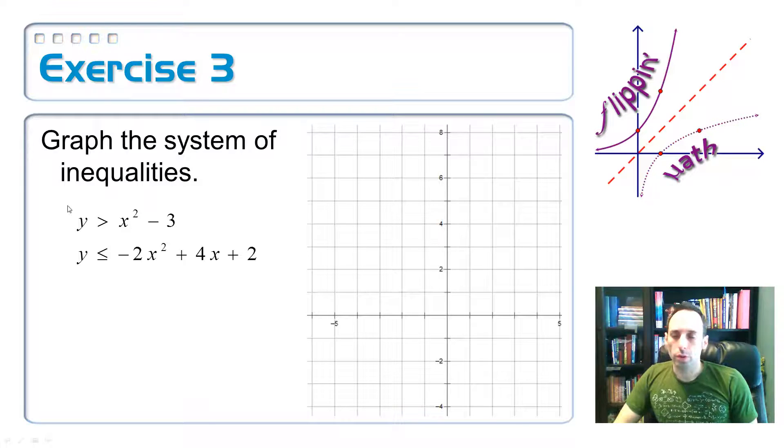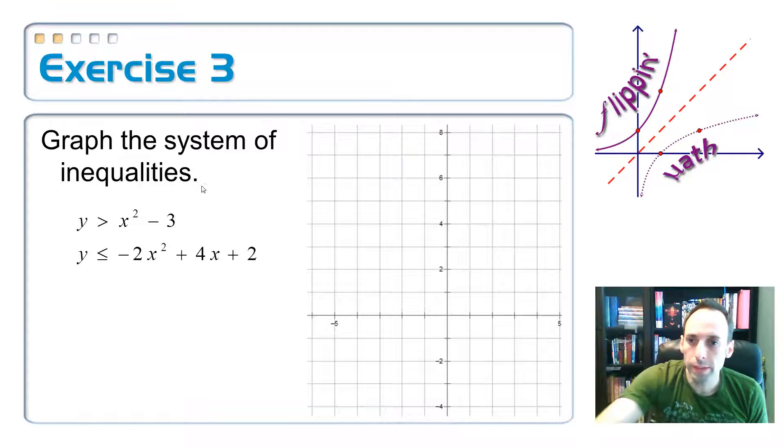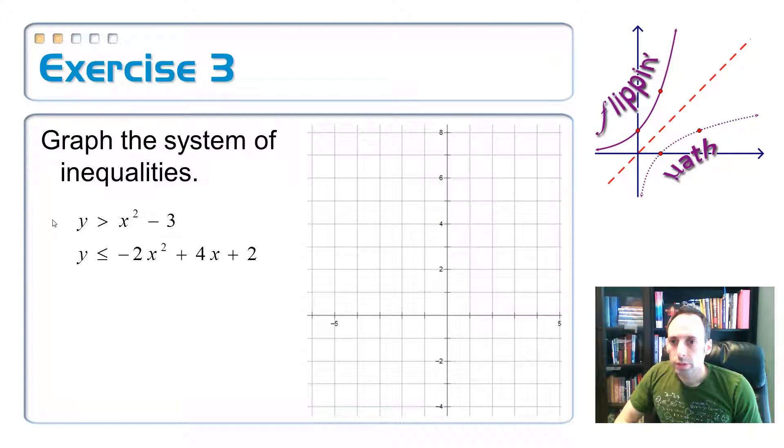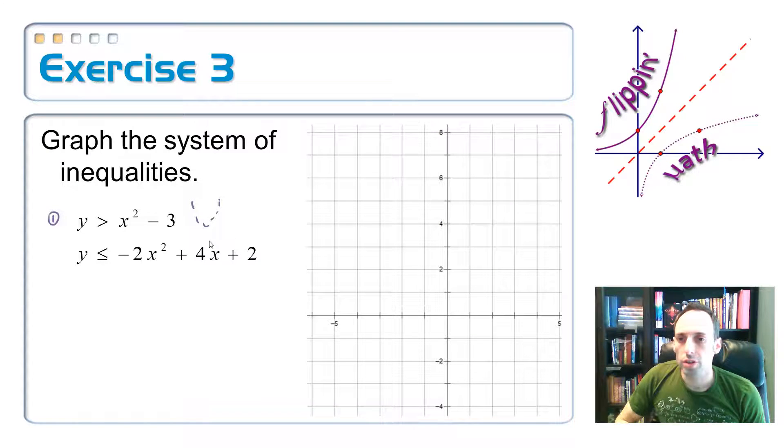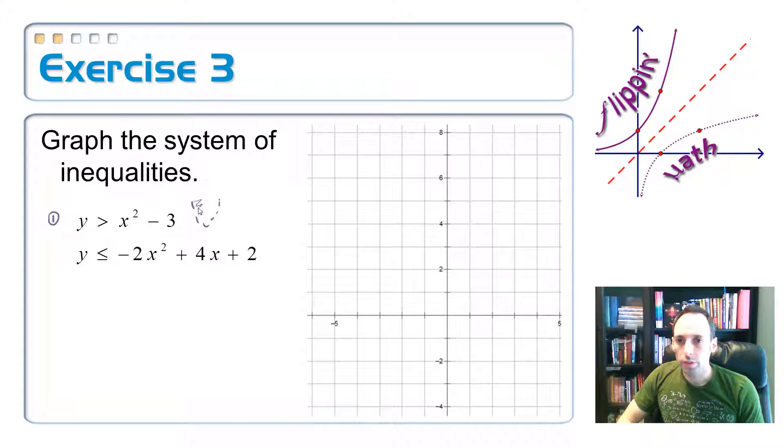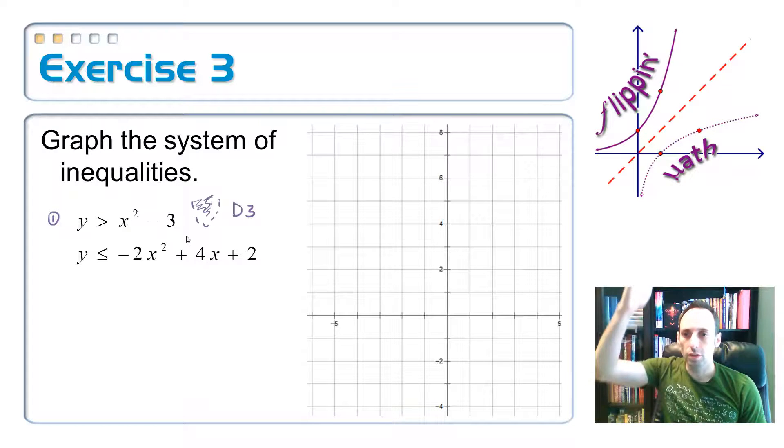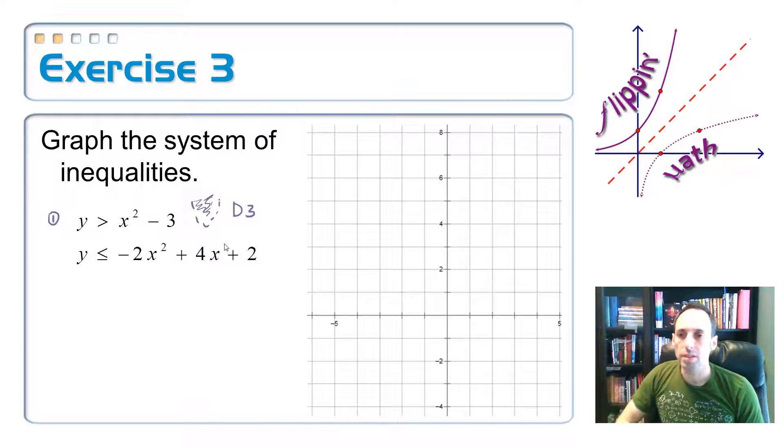On the first one, let's just graph the first one. I'll put a little number one there. It is upwards. Whoops, I made that a solid one. Is that one a solid one? No, it's not. This one is a dashed one. Which direction is this going to be shaded? Y is greater than, so it's going to be shaded on the inside like so. This is just the parent function moved down three. Everything is exactly the same as the parent function, just moved down three. That one should be a piece of cake to graph.